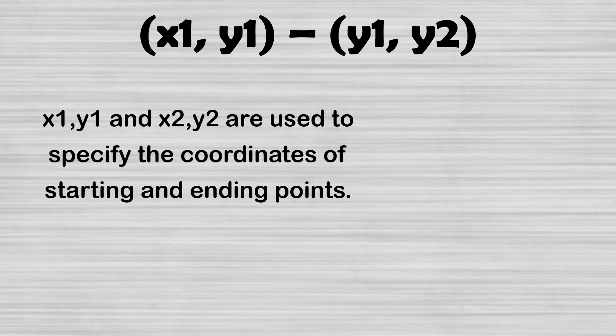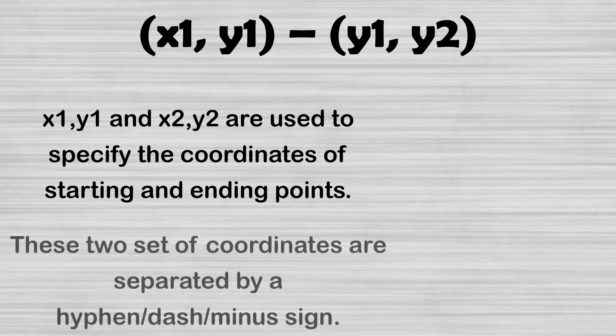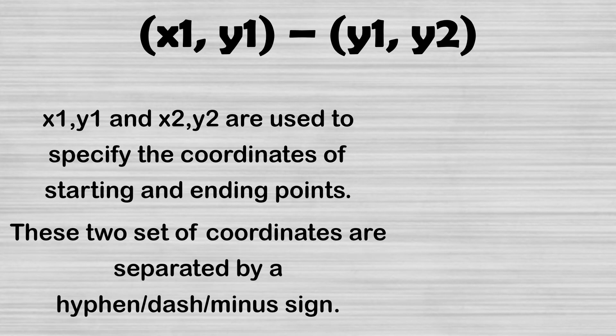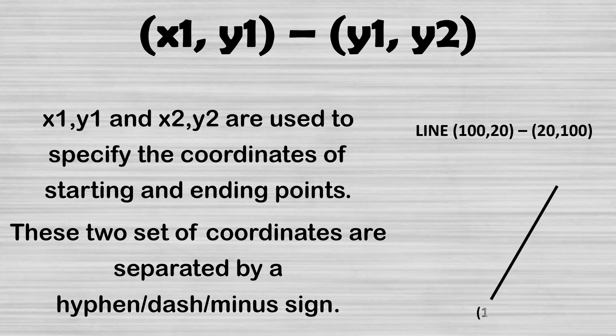x1y1 and x2y2 are used to specify the coordinates of the starting and ending points of the line. These two sets of coordinates are separated by a hyphen, dash, or minus sign. For example, if we say LINE 120 TO 200, the line will be drawn like this.